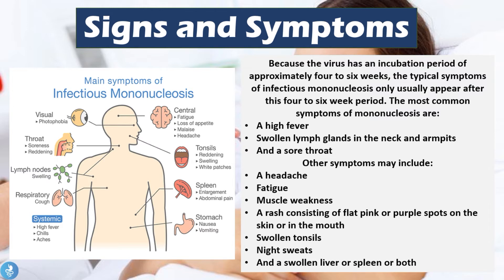Other signs and symptoms may include a headache, fatigue, muscle weakness, a rash which usually consists of flat pink or purple spots on the skin or in the mouth, swollen tonsils, night sweats, and a swollen liver or spleen or both. Patients may also suffer from inflamed tonsils, malaise, loss of appetite, a cough, and nausea or vomiting.